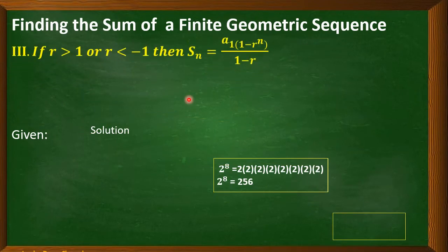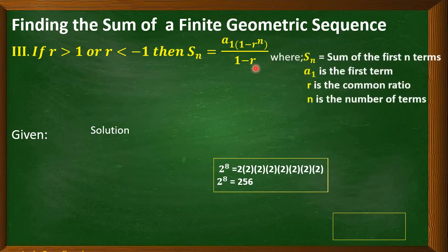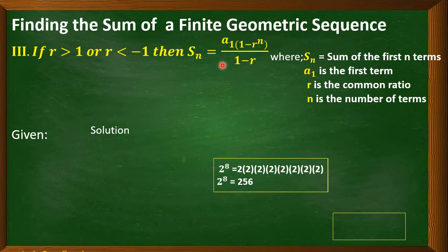The third formula is S sub n equals a sub 1 times the quantity of 1 minus r to the power of n, all over 1 minus r. Where S sub n is the sum of the first n terms, a sub 1 is the first term, r is the common ratio, and n is the number of terms. You will use this formula if r is greater than 1 or less than negative 1.